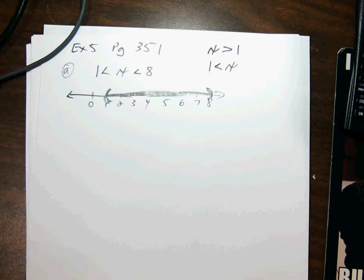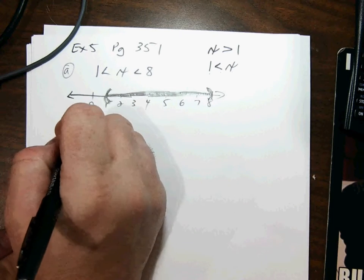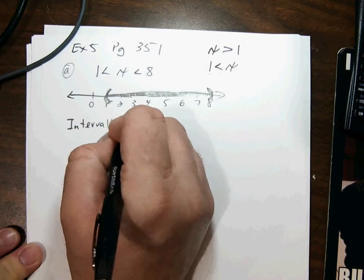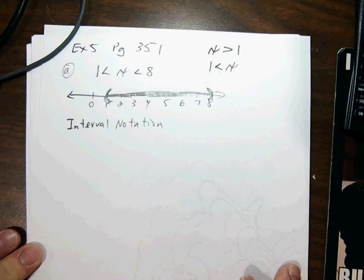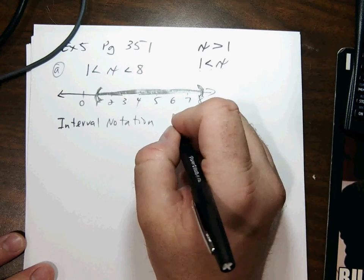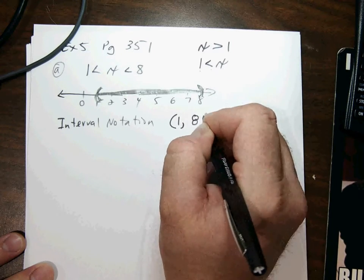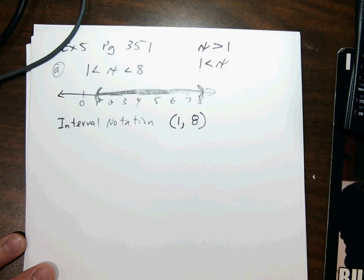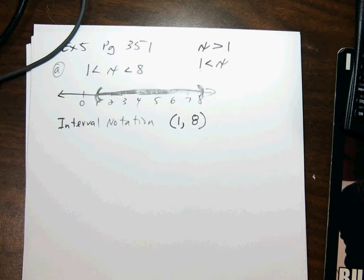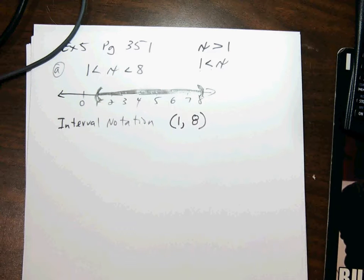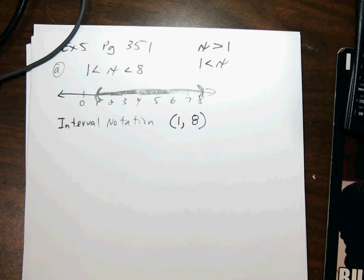Another way to show this is interval notation. Interval notation lists the set of numbers starting at one — not including one — going up to eight, not including eight. So we write parenthesis, one, comma, eight, parenthesis: (1, 8). That's how we show that range of numbers. You're not responsible for the set builder notation with curly braces, but you do need to know interval notation and number line notation.